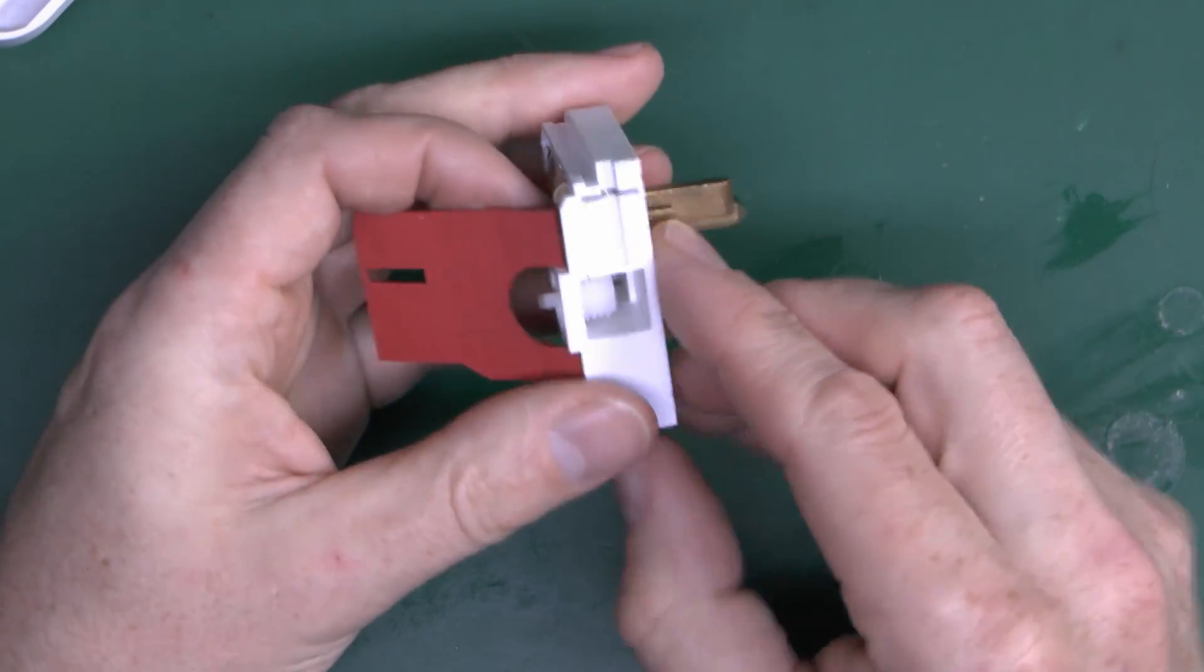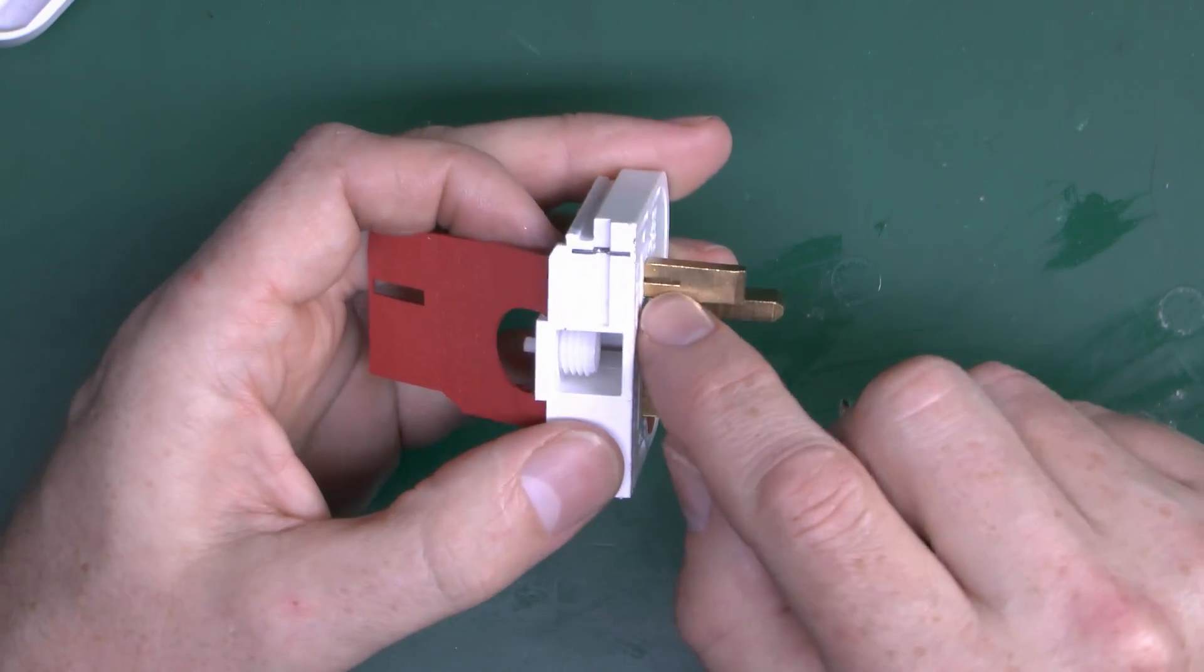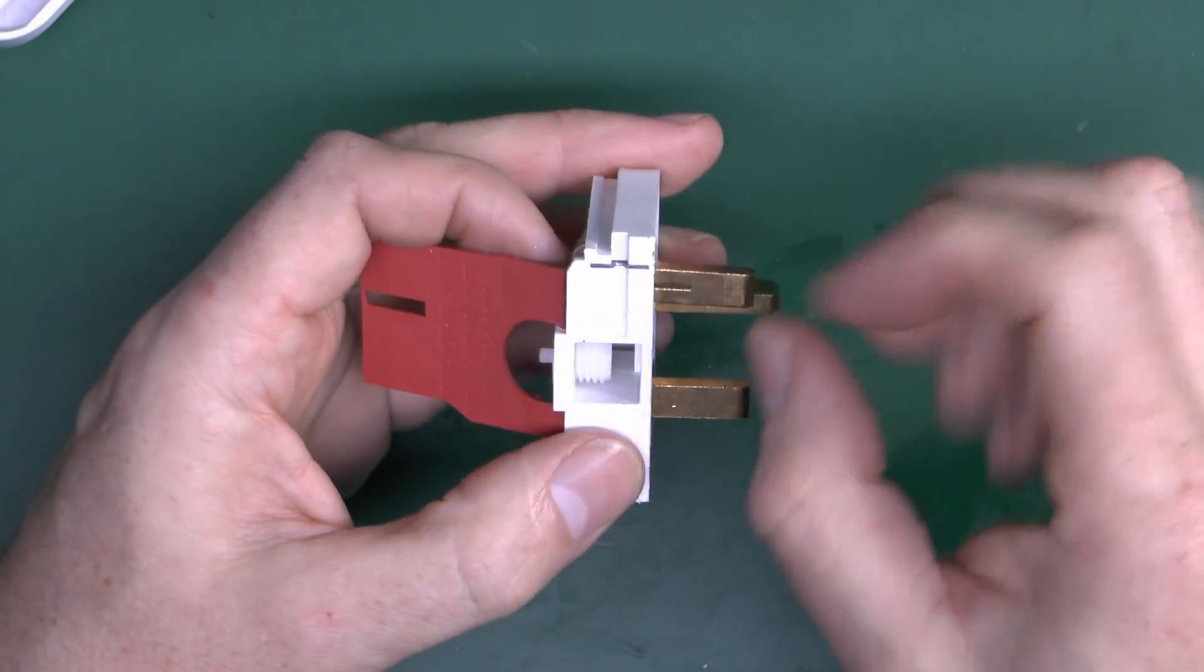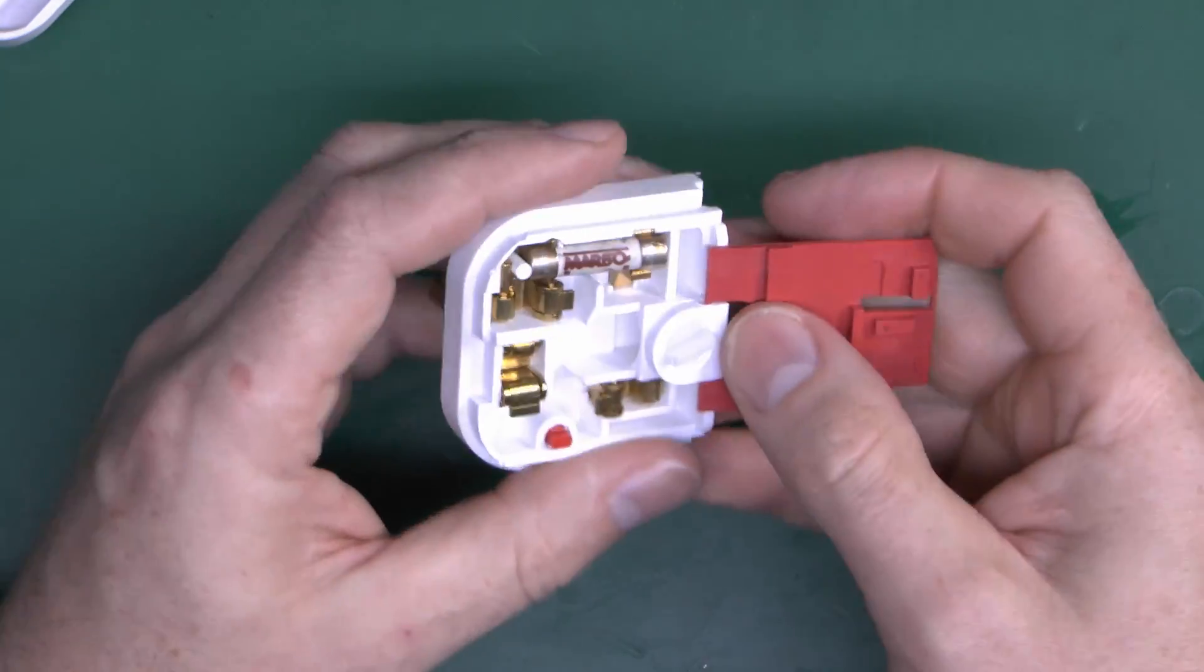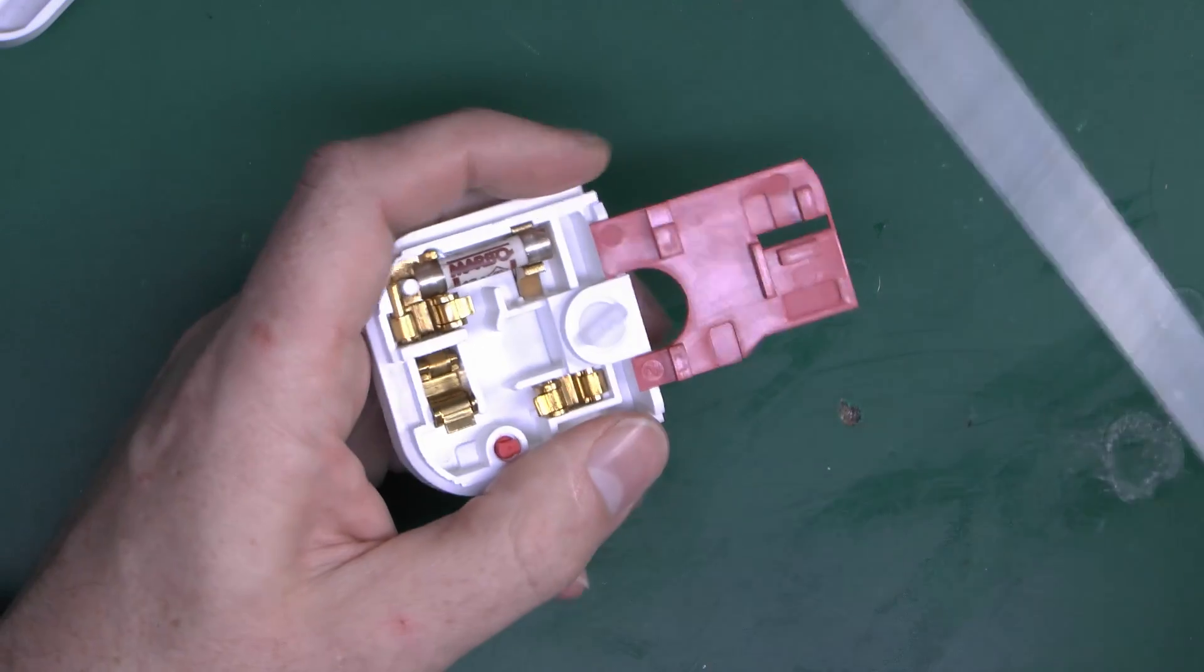Now you notice on this side that the pin actually has a slot cut into it there. And this was again a fairly common feature on a lot of plugs, and the reason for that is that by cutting that slot you've then got two pieces, and those two pieces come up here, and it gives you a better grip on the fuse holder.